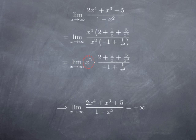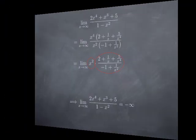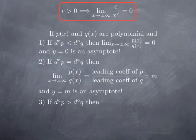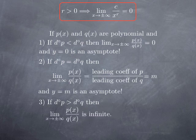More generally, if the degree at the top is higher, after factoring and cancellation we get a positive power of x multiplied by a fraction approaching some non-zero constant. The product therefore has an infinite limit. In other words, when the degree at the top is higher, the limit of the quotient is infinite—it could be positive or negative infinity, depending on the sign of the leading coefficients of p and q and whether the difference of the degrees is odd or even. Because the limit is infinite, there is no horizontal asymptote.